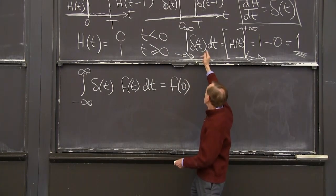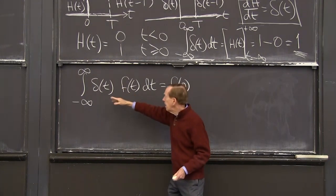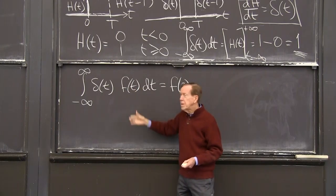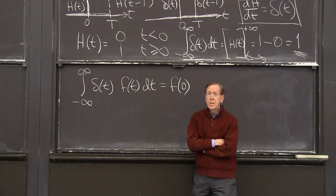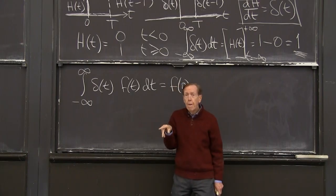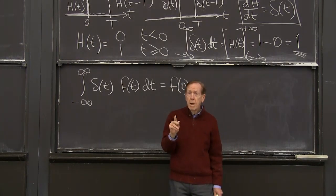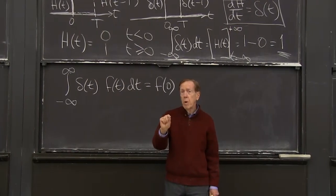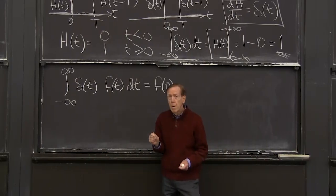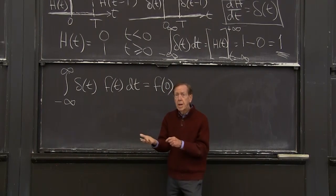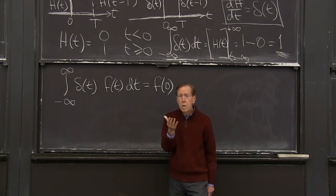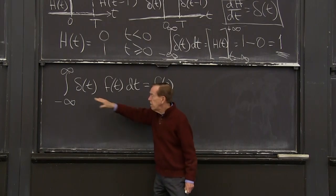So if f of t was the constant function 1, then we're back to our integral up there. If that's just 1, I'm integrating delta of t. If my function is 1, I get 1. But if that function is, well, suppose that function is sine t. What's the integral of delta of t times sine t dt? Well, sine t happens to disappear just at the moment when the delta function is ready to turn on at t equals 0.